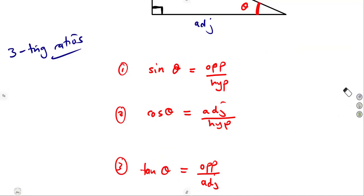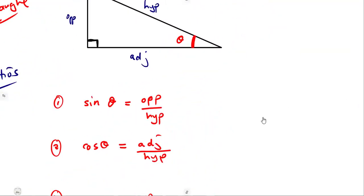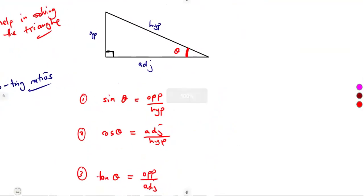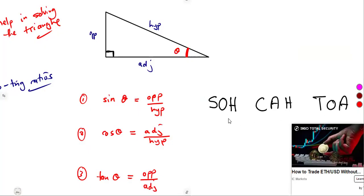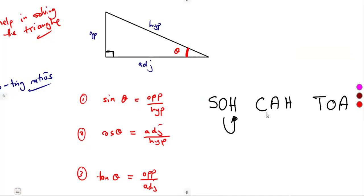Those are the three trigonometrical ratios, which we can memorize using the mnemonic SOH-CAH-TOA. From this: S — sine of an angle equals opposite over hypotenuse; C — cosine of a certain angle equals adjacent over hypotenuse; T — tangent of a certain angle equals opposite over adjacent. Even in an exam, you can use this coding applied according to the given triangle, remembering to name the triangle according to the angle.